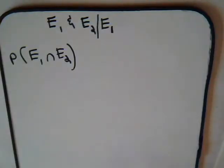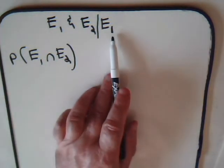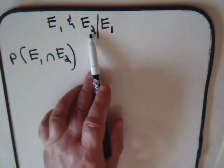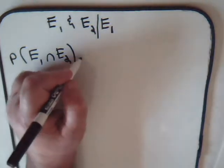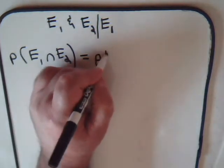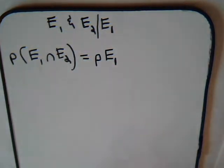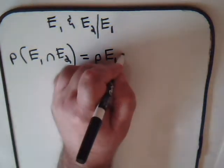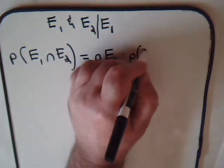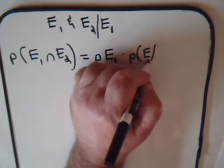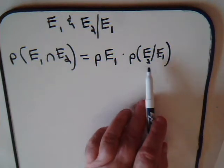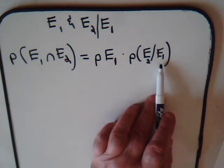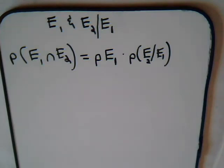The conditional event is designated like this: a red ball is selected, then on the second try a white ball is selected. The probability of their joint occurrence is the probability of the first event occurring — that is, selecting a red ball — times the probability of the conditional occurrence, meaning a white ball is selected provided that a red ball was selected earlier. This is always true whether or not E1 and E2 are independent events.